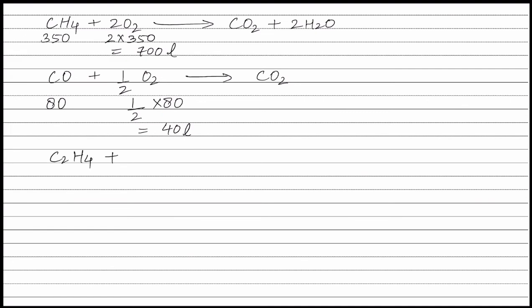The balanced equation for combustion of C2H4 is C2H4 + 3O2 → 2CO2 + 2H2O. From the balanced equation, 1 mole of C2H4 reacts with 3 moles of oxygen to form 2 moles of carbon dioxide and 2 moles of water. Therefore, 20 liters of C2H4 will react with 3 × 20 = 60 liters of oxygen.